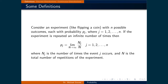Consider an experiment such as flipping a coin with n possible outcomes, each with a probability p sub j of occurring, where j could be 1, 2, and so on up to n. In this case, j represents each outcome. So for the coin example, j is only equal to 1 or 2, since there are only two sides to a coin.